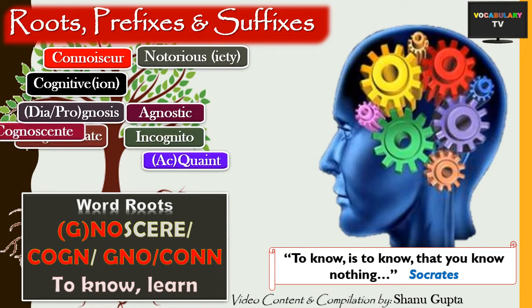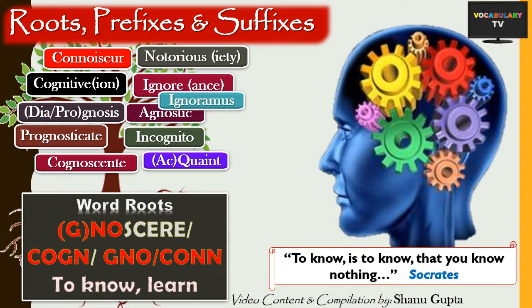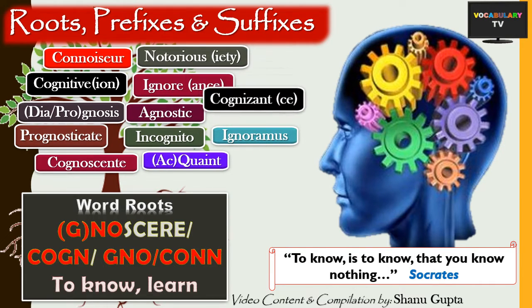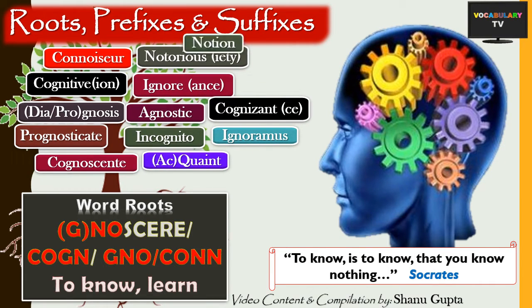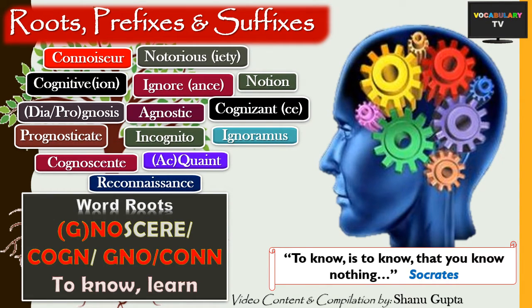The words in this video lesson are based on the root Nucer, which manifests itself in the following bases: Cogn, Gno, and Con — all of which mean 'to know' or 'to learn'. We can learn several interesting words using this root connection. So, let's begin.